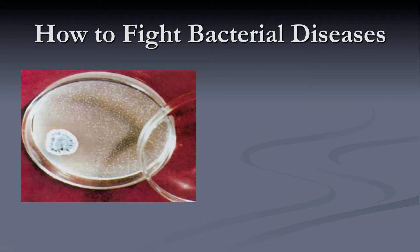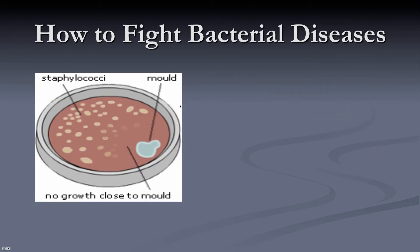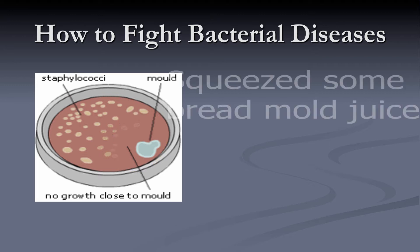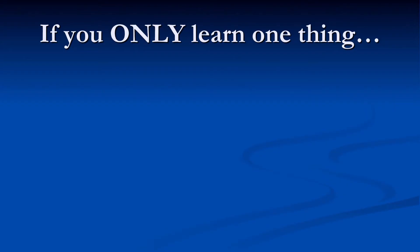Antibiotics were invented by Alexander Fleming — if you've taken amoxicillin, penicillin, or erythromycin, those are all antibiotics. Fleming was working in his lab with petri dishes full of bacteria colonies when accidentally some bread mold contaminated his dish. He noticed that around the contamination no bacteria were growing, so he thought something in the mold was keeping bacteria from growing. He squeezed out the mold — bread mold called penicillium — and that's where the name penicillin comes from.